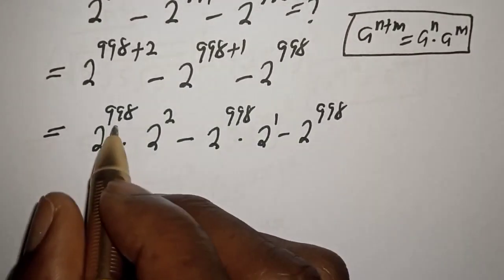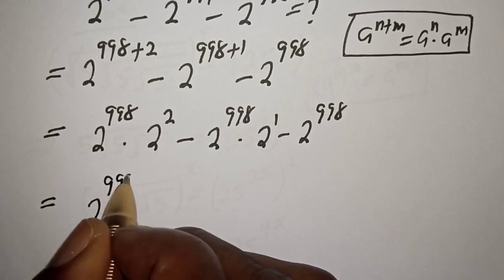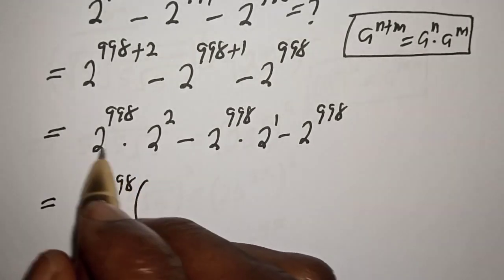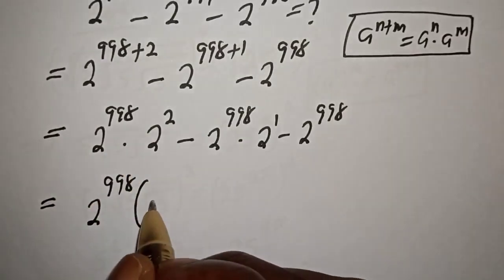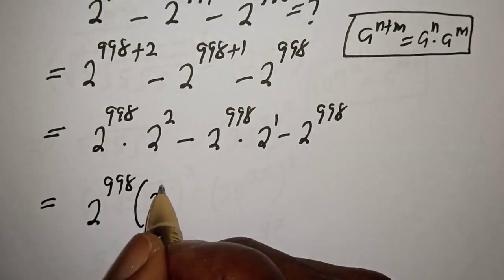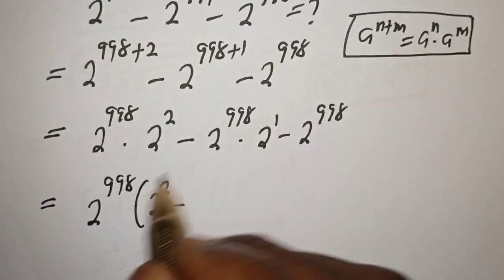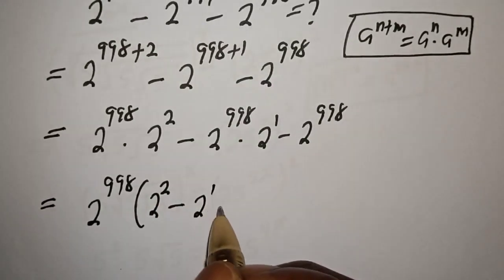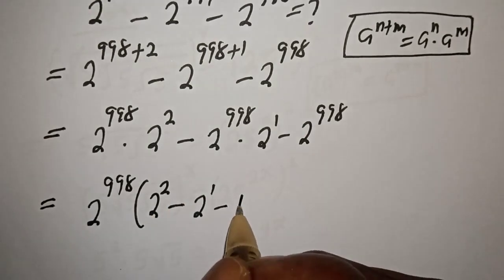Equal to 2 raised to power 998 — let's bring it out as a common factor. Dividing through, we have 2 squared, minus 2 raised to power 1, minus 1.